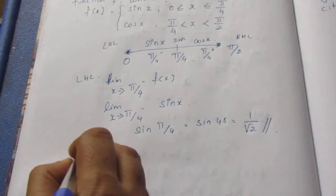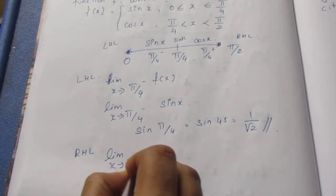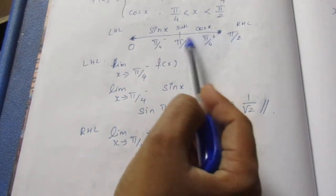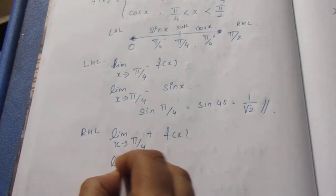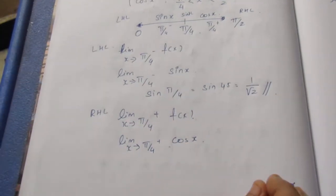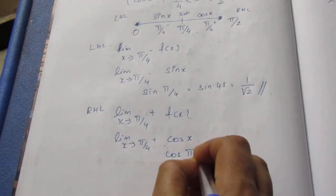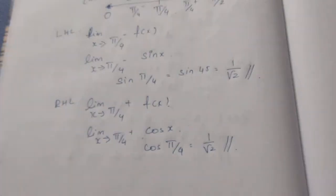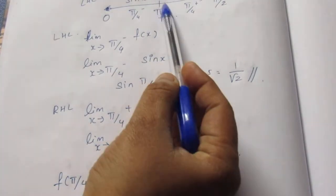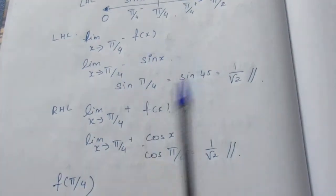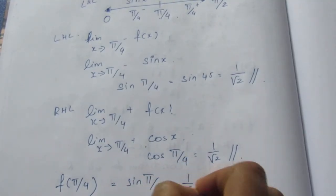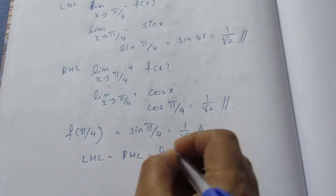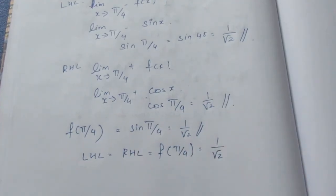Now for the RHL: limit as x tends to π/4 plus of f(x) = limit of cos x, because in the interval (π/4, π/2) f(x) = cos x. Substituting x = π/4, cos(π/4) = cos 45° = 1/√2. So LHL = RHL = f(π/4) = 1/√2.